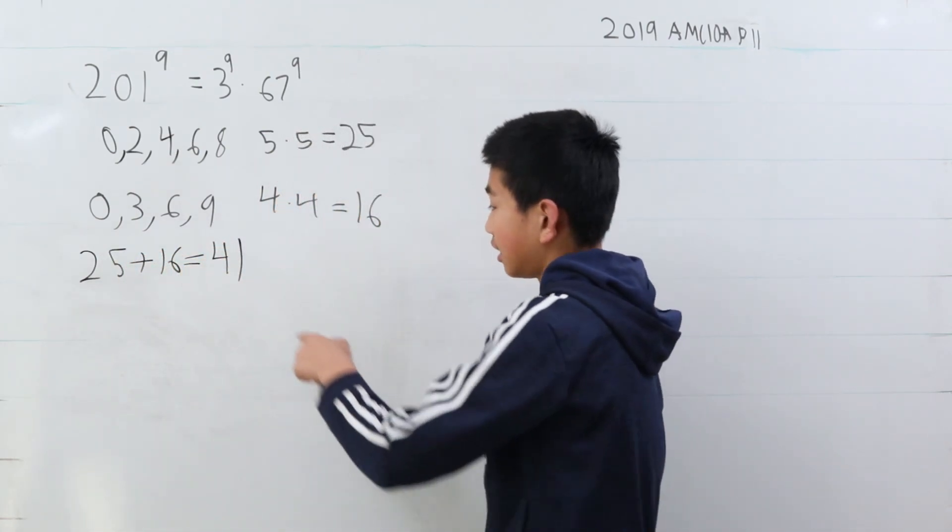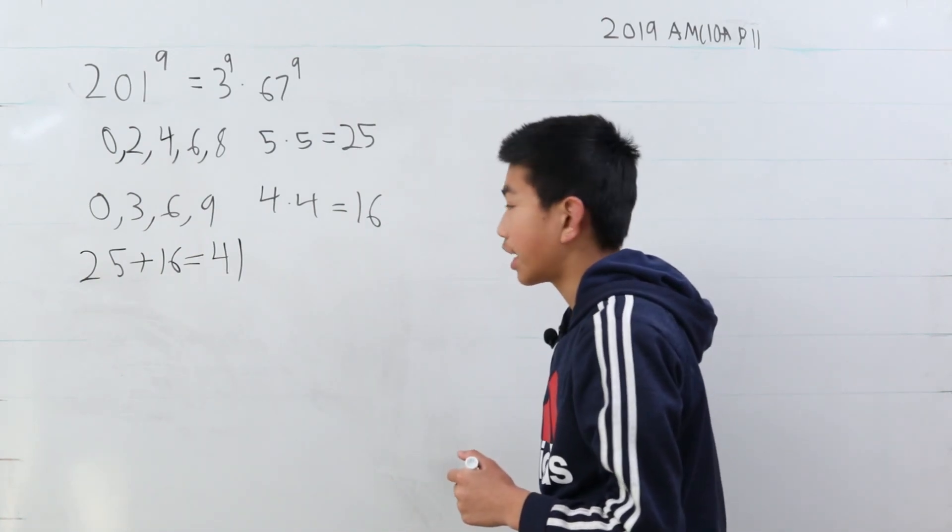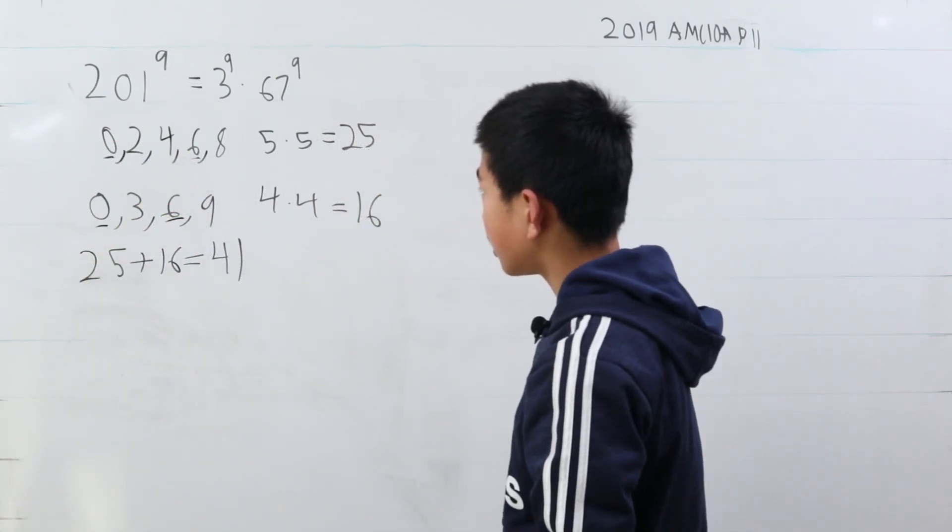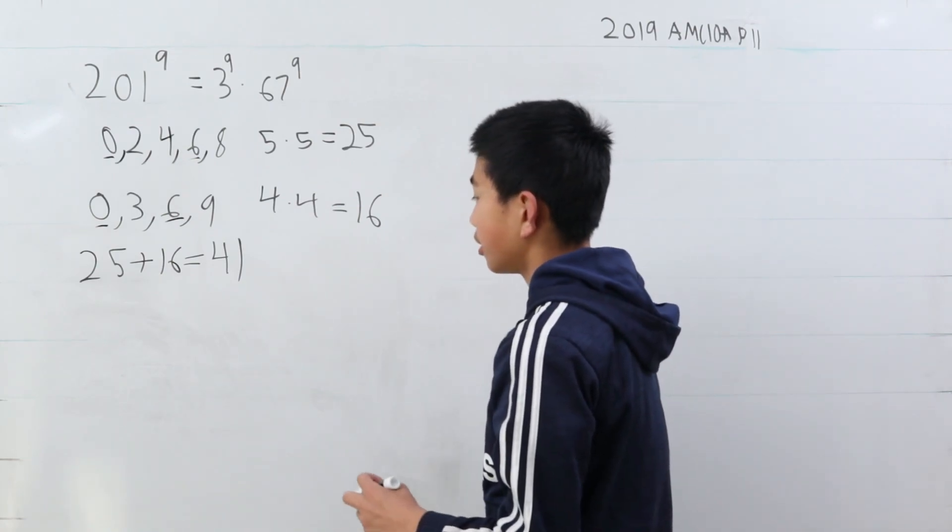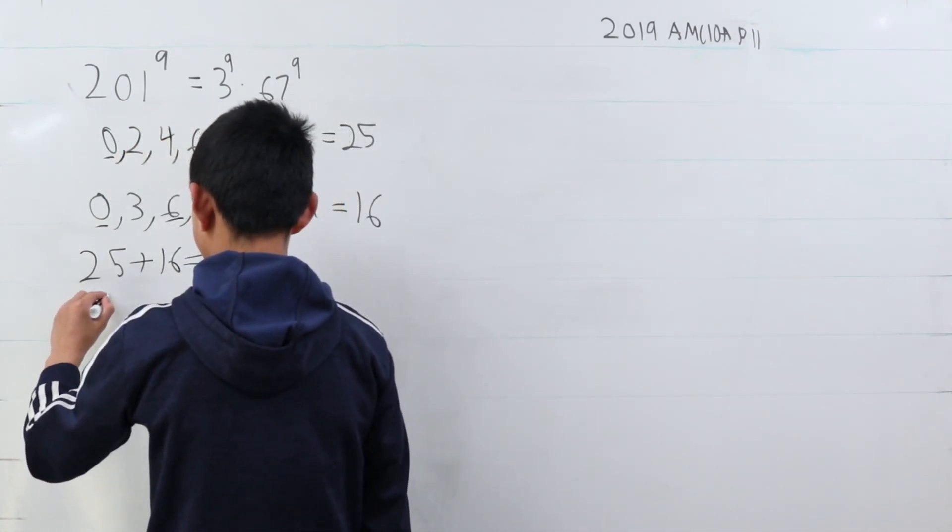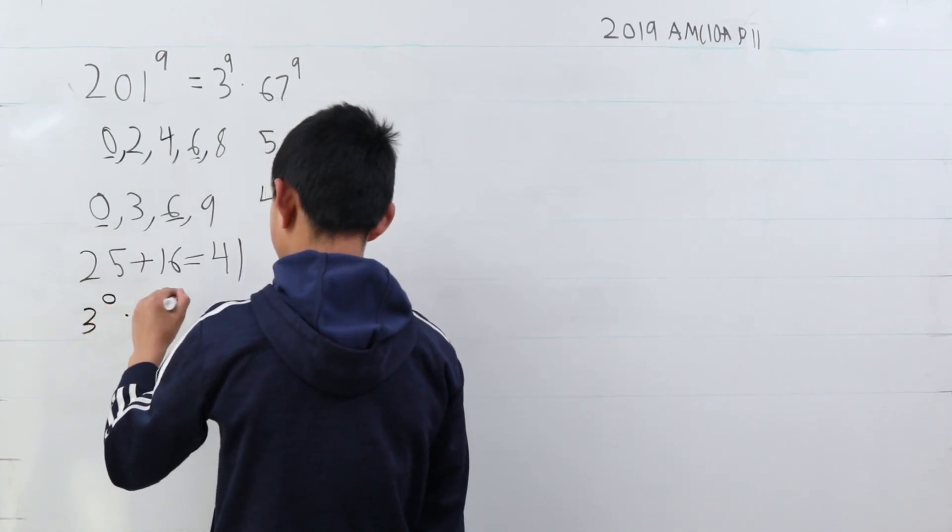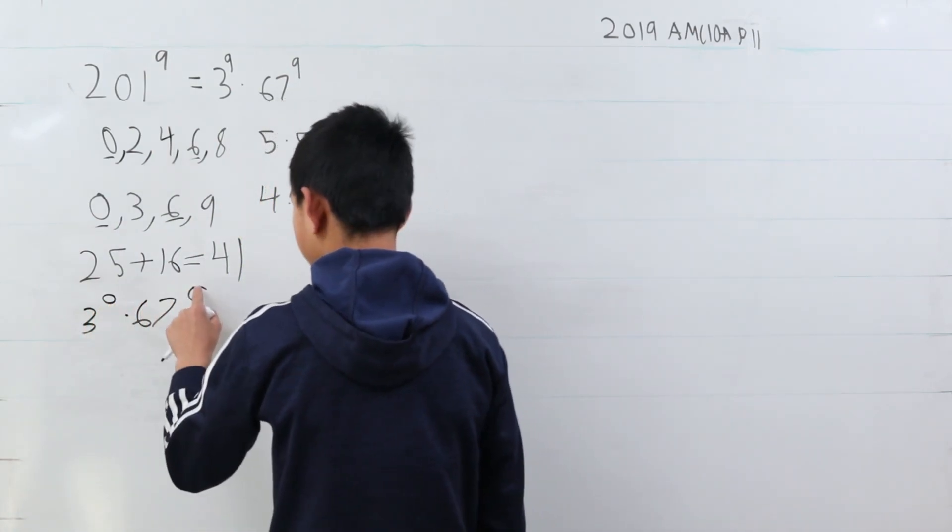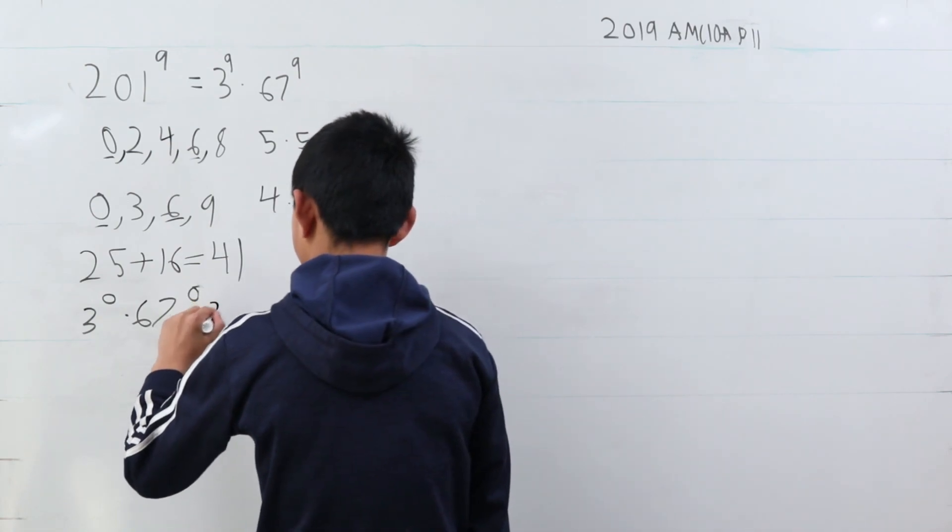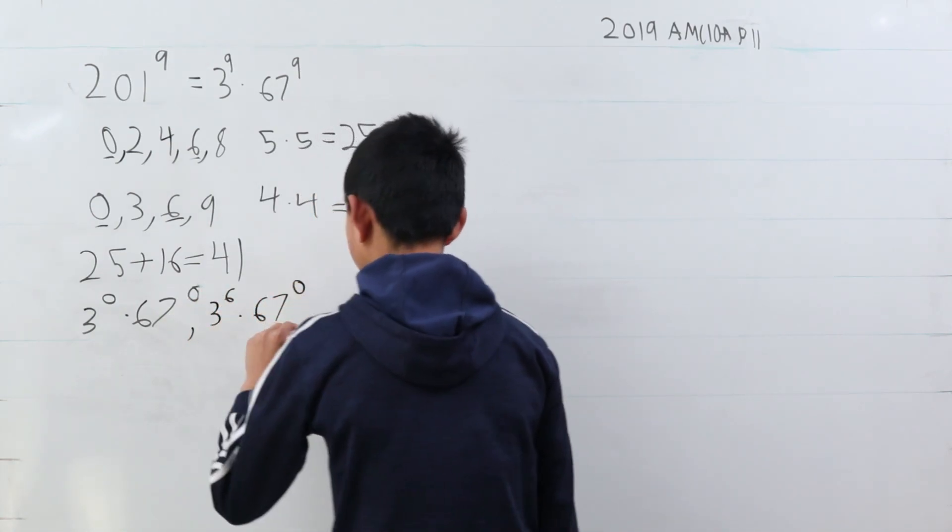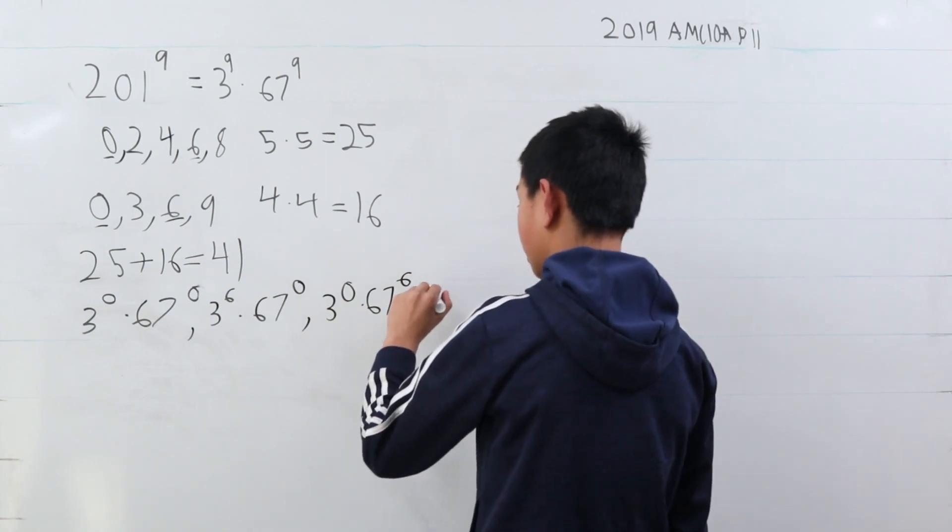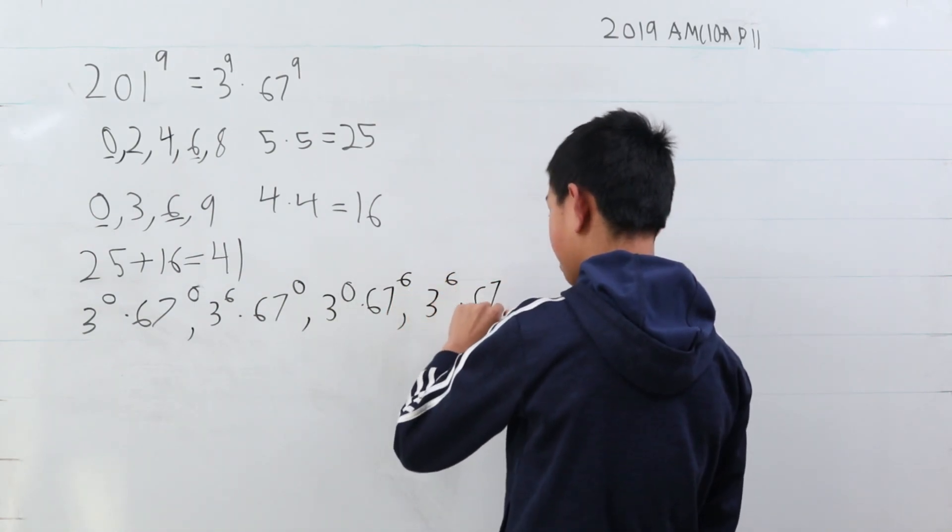Now, we might think this is our answer, but in this case, we already overcounted. Some terms cross over, like 0 and 6. That means we counted a few cases. Since we incorporated the 0 and the 6 here, that means we included 3 to the 0 times 67 to the 0. We also included 3 to the 6 times 67 to the 0. We also included 3 to the 0 times 67 to the 6, and 3 to the 6 times 67 to the 6th power.